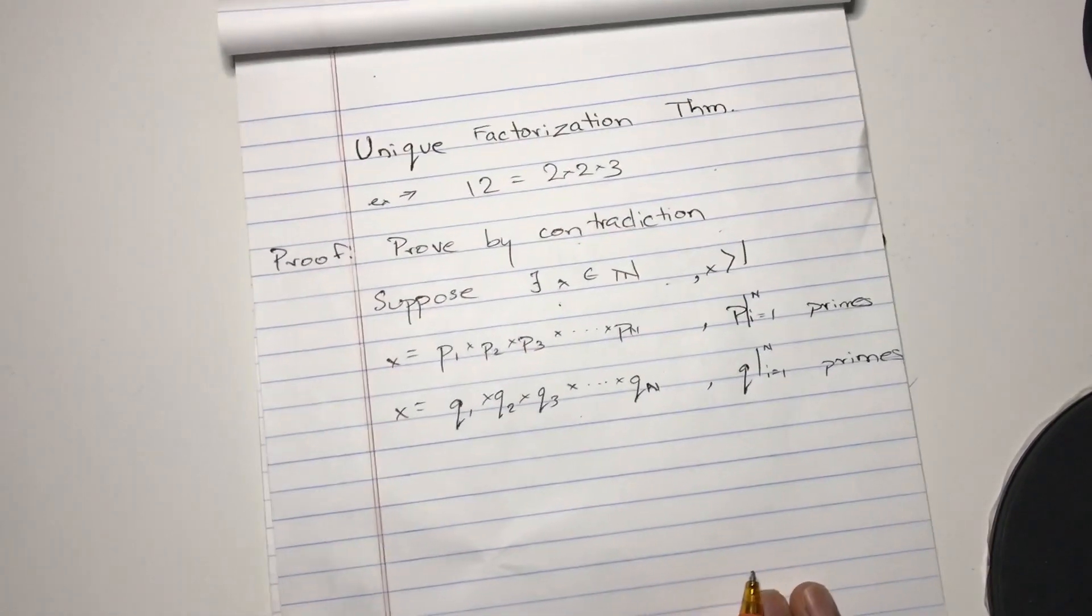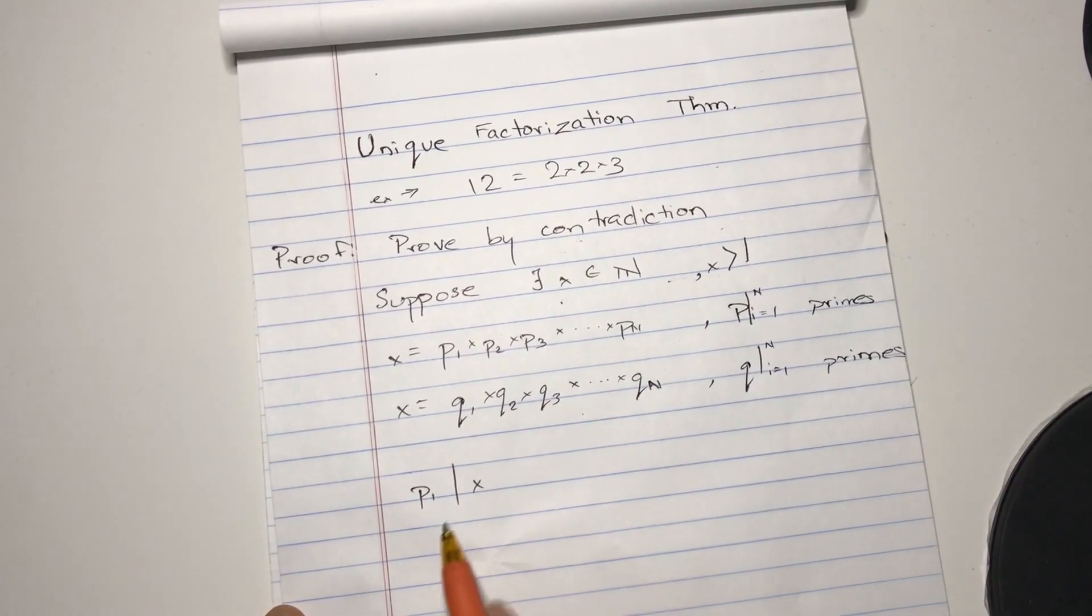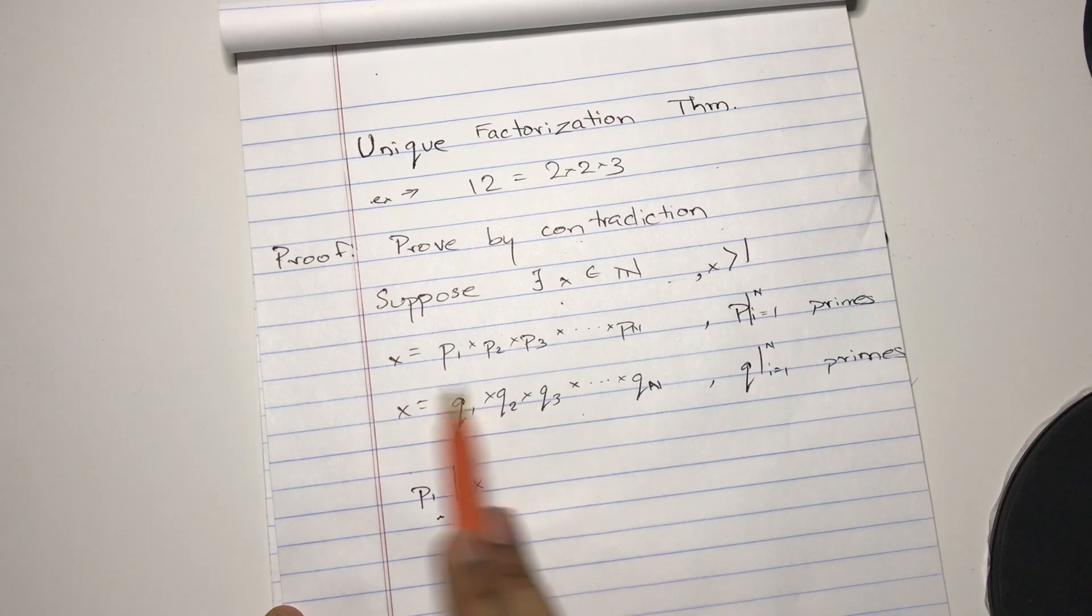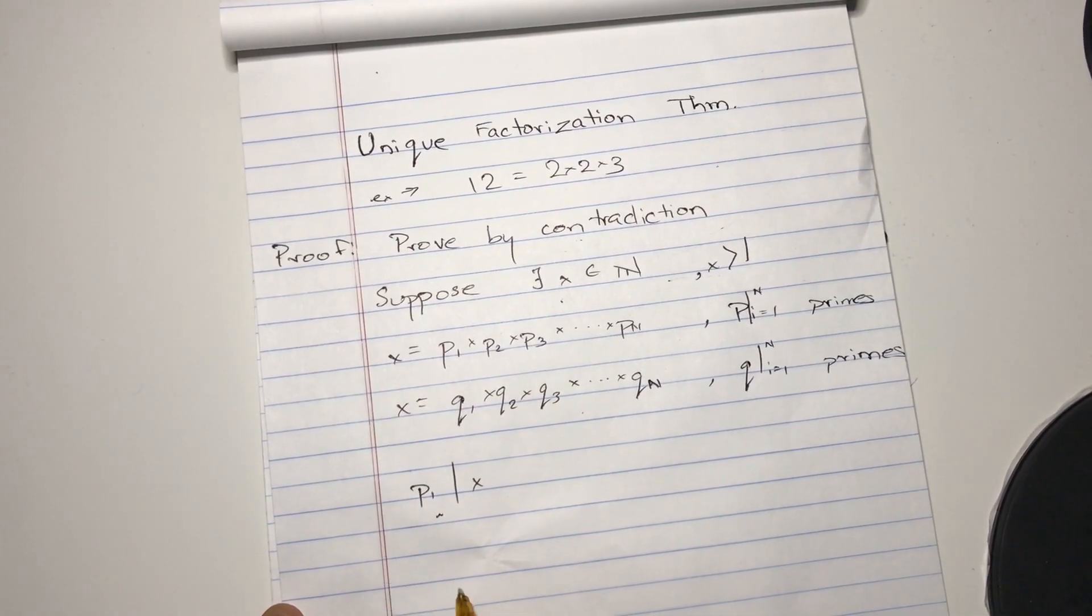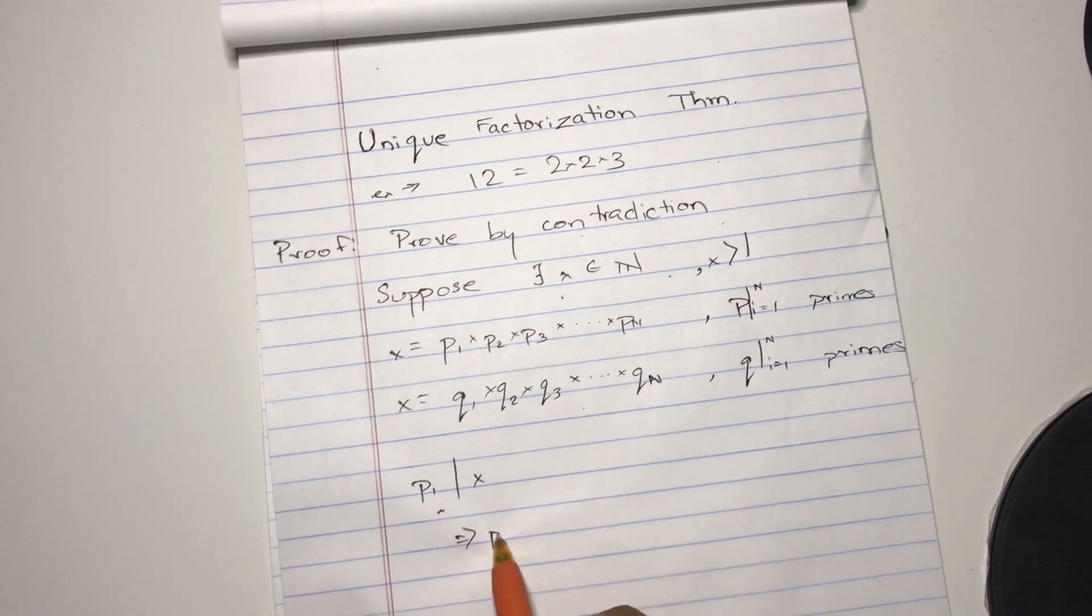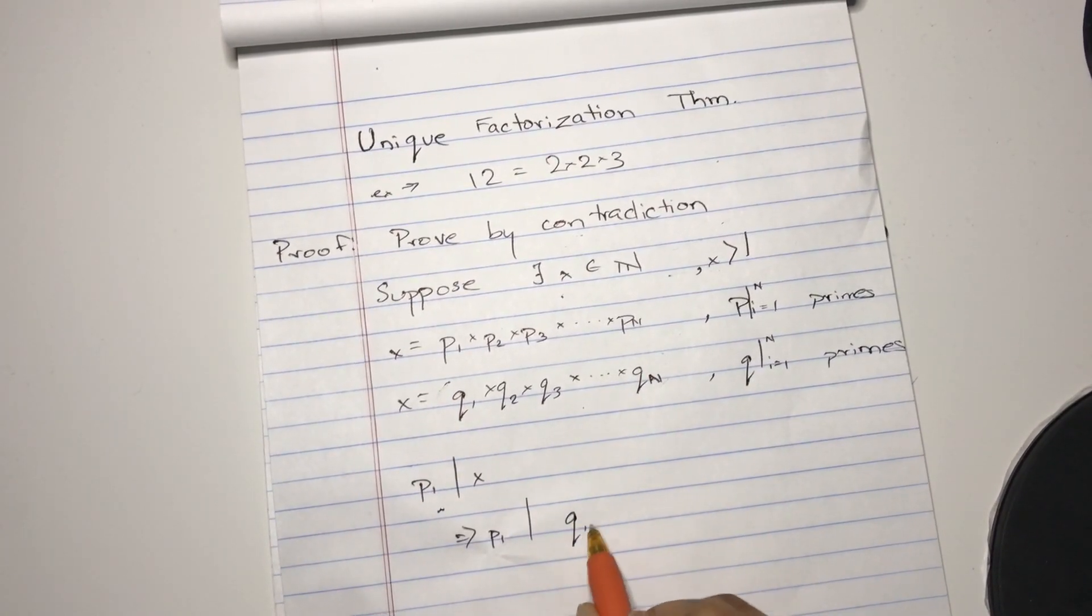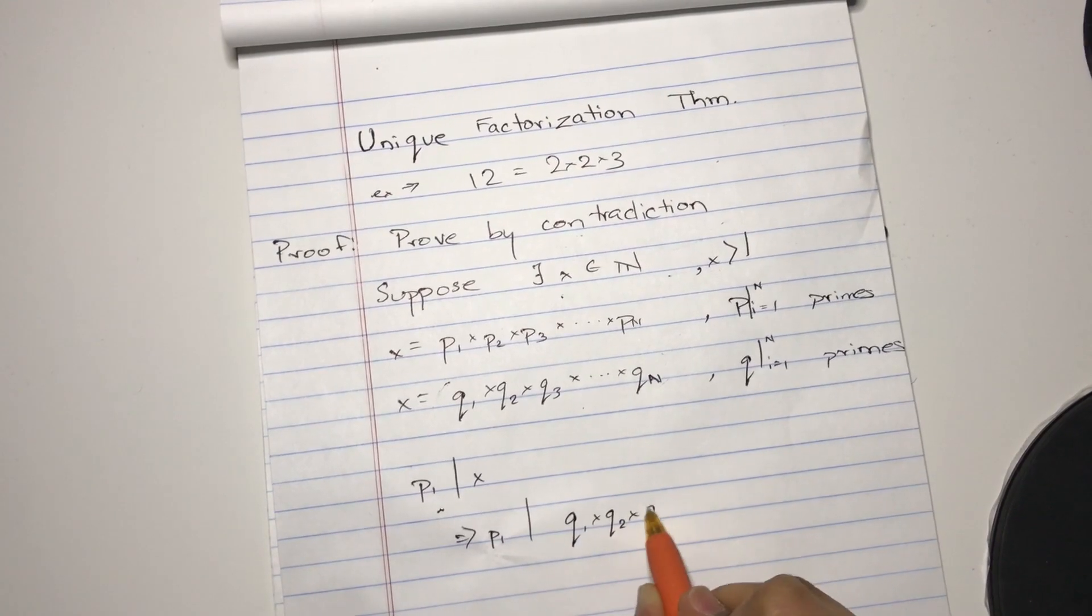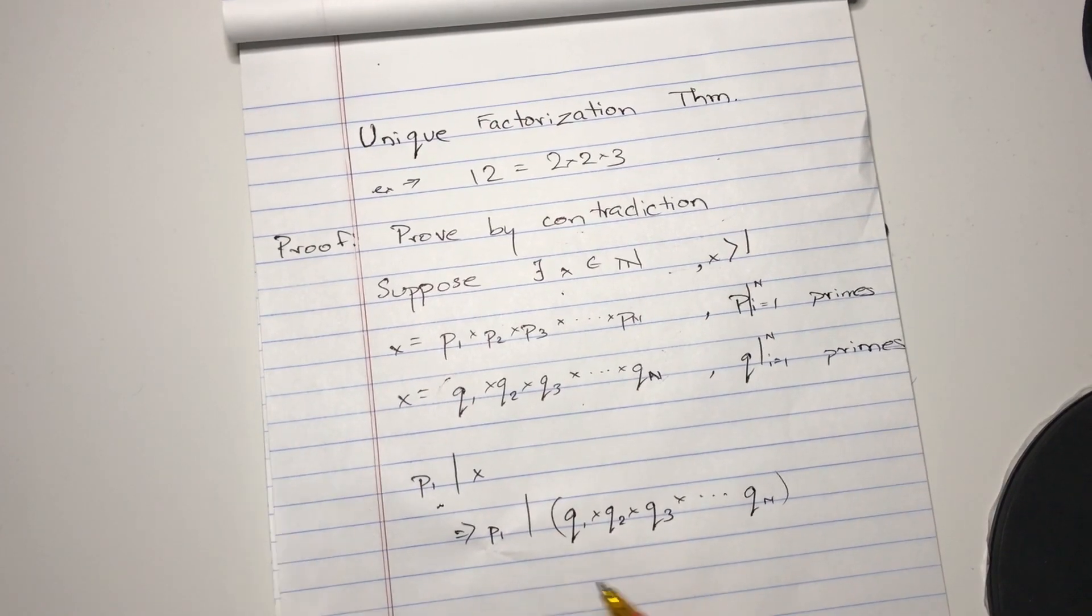So we know that p1 divides x, right? Since it makes sense from here. p1 divides x. Therefore, p1 divides this version of x. So q1 times q2 times q3 all the way to qn, because this equals x.